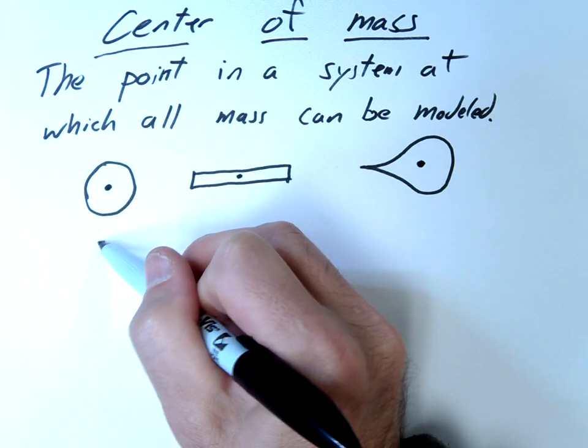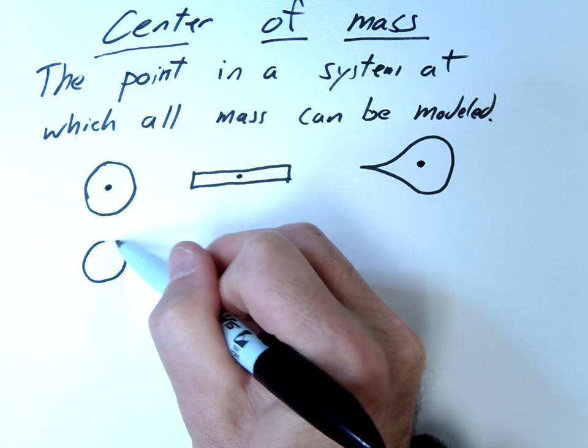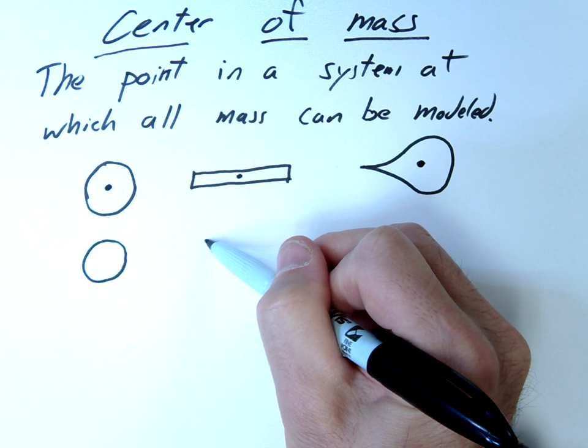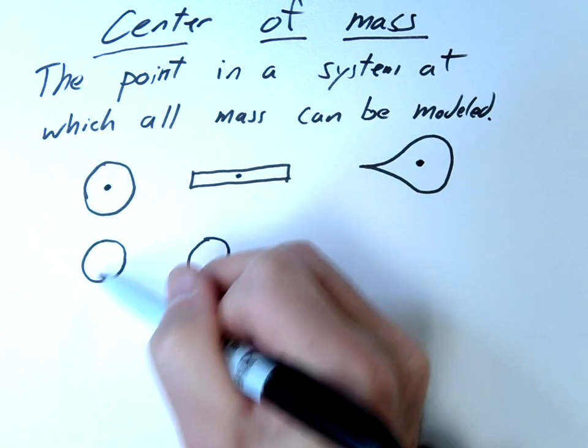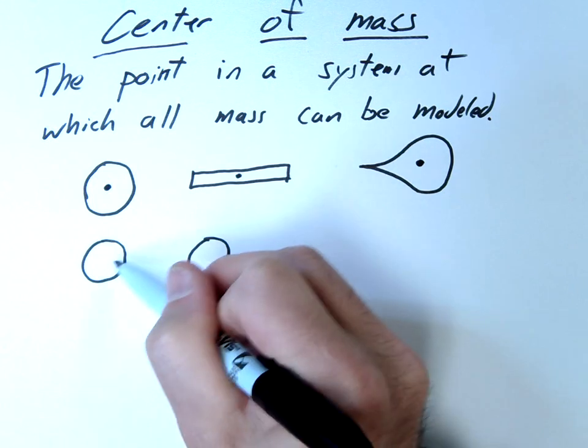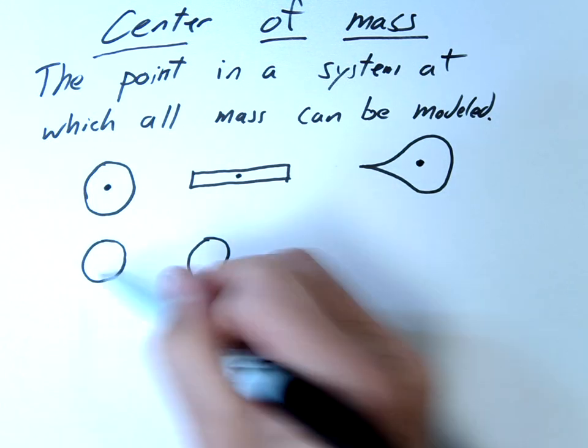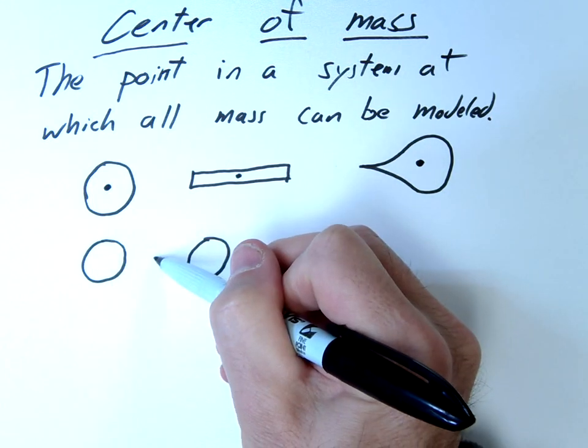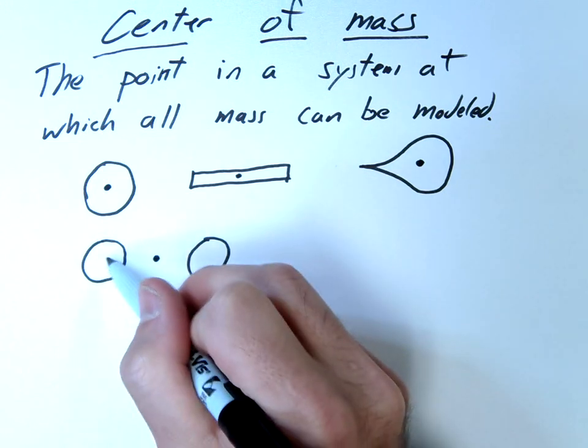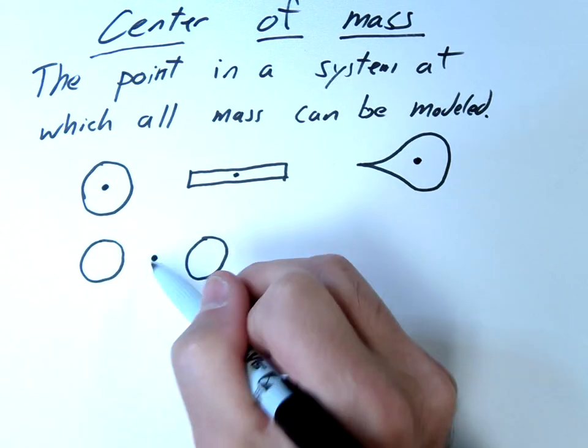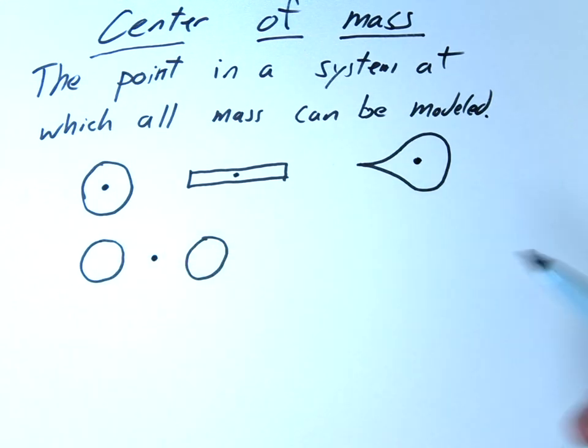Well, the same is true if we have multiple masses. For example, if we have two balls of equal mass, the center of mass of this system would not be in either ball. It would be actually the very center of the two balls. So this would be one ball, this would be the other, and the center of its mass would be over here.